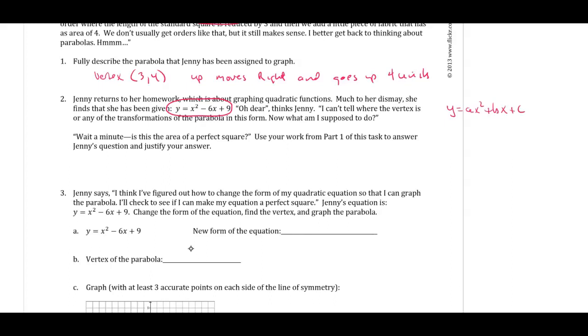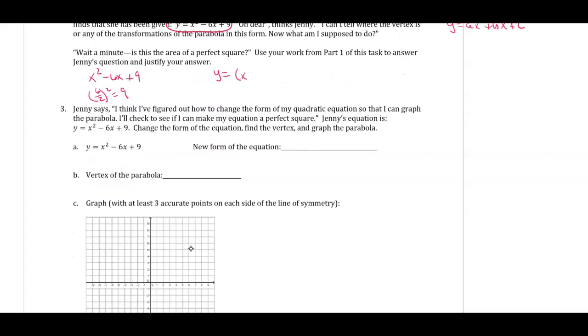And if you look at it, it's hard to determine where the vertex for this function is. But wait a minute, is this the area of a perfect square? Use your work from part one of this task to answer Jenny's question or justify your answer. So basically what they're saying is if you take the x squared minus 6x, think about this. If we take 6, divide it by 2 and square it, what do we get? We get 9. So it would be plus 9. Doesn't that match up? So we could rewrite this. So we could really write this equation real easy as y equals (x - 3) all squared.